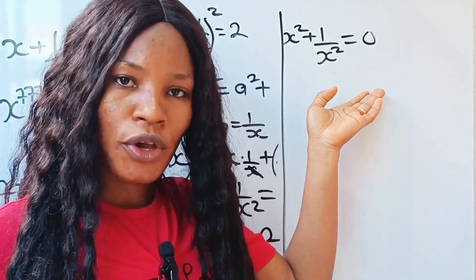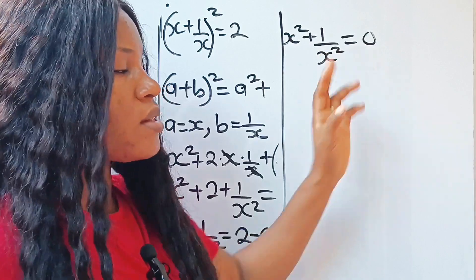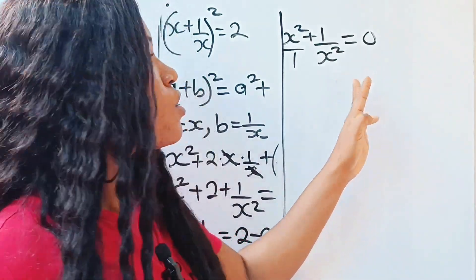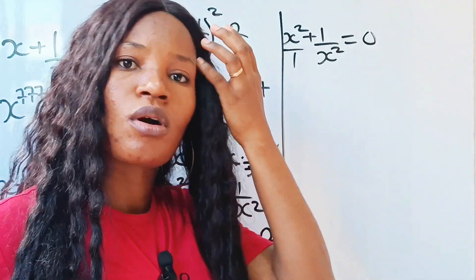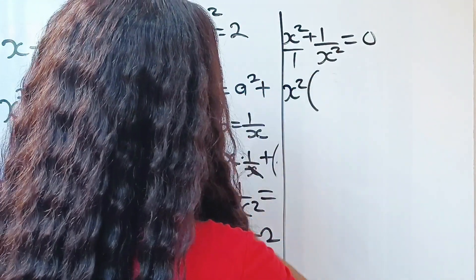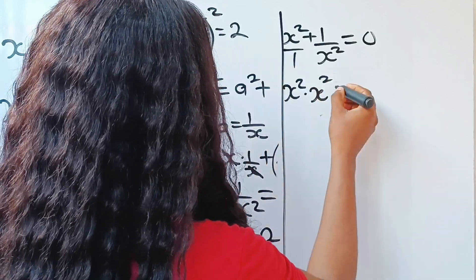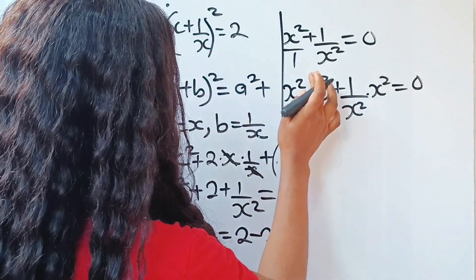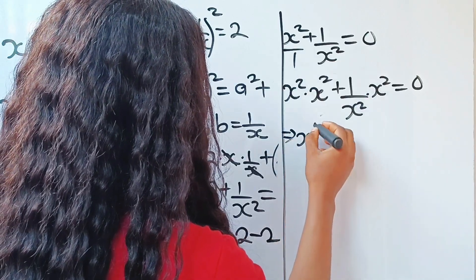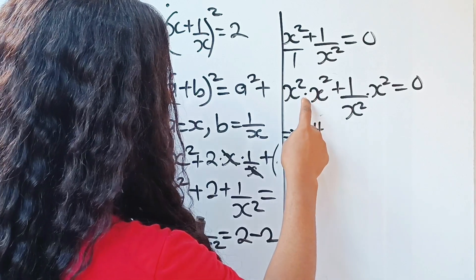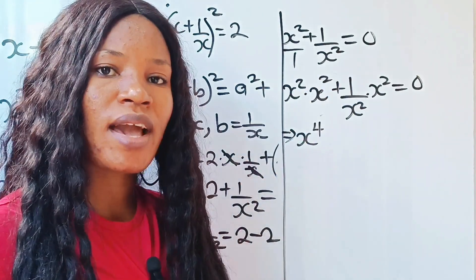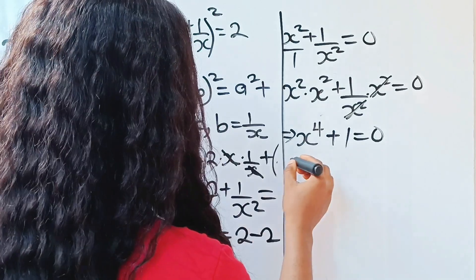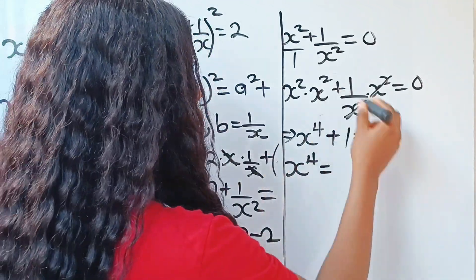Now I want a simplified equation, so I'm going to multiply through by x squared. The LCM of 1 and x² is x², so multiplying through gives x² times x² plus 1 over x² times x² equals 0. That gives x to the power of 4 plus 1 equals 0. This implies that x to the power of 4 is equal to minus 1. This is a very important equation.